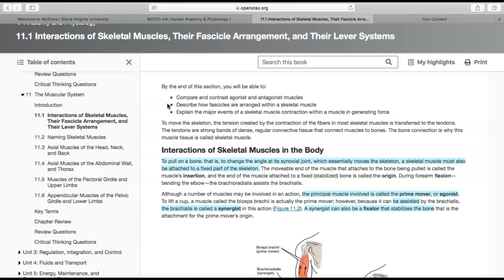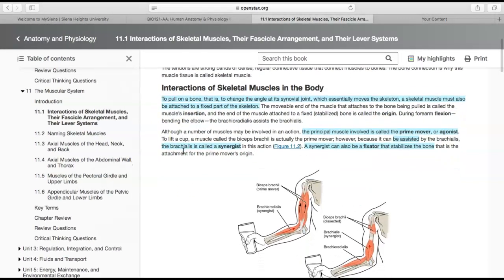I'll start with the interactions of skeletal muscles, then their fascicle arrangement, and then their lever systems. Not all of chapter 11 will be covered in lecture. When we look at actual naming of muscles, we'll do that in Visible Body for the lab, but it'll be clear which parts are covered in lecture versus lab. Let's get into the interactions of skeletal muscles in the body section.